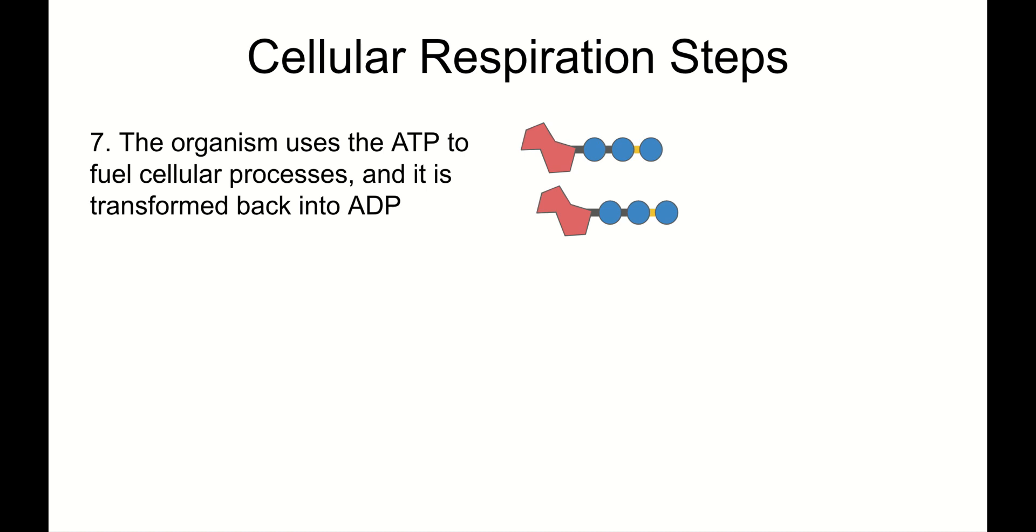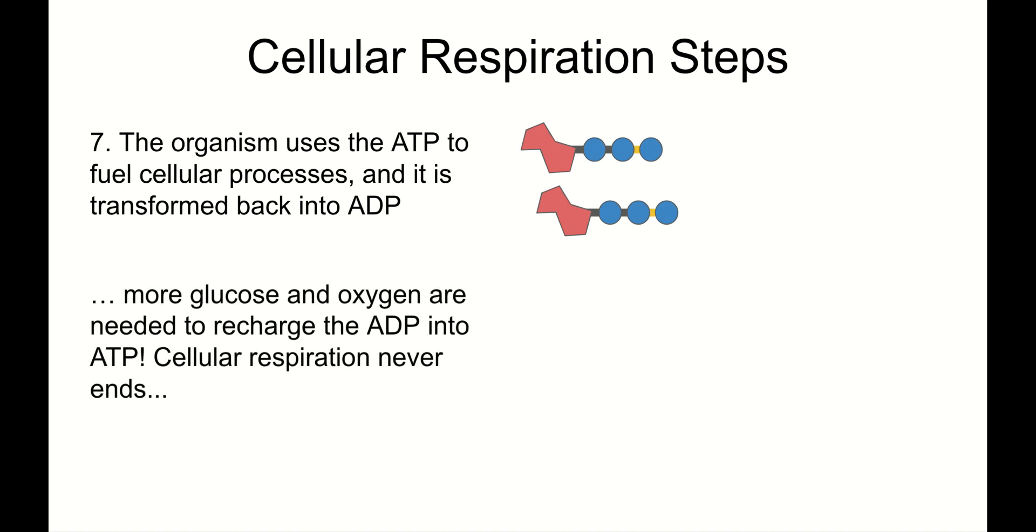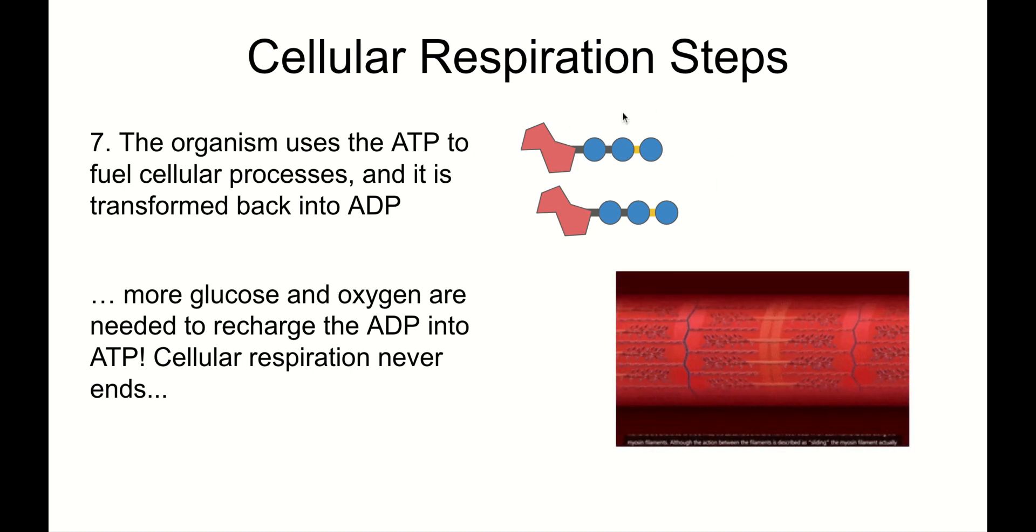Finally, last step, step seven: The organism will use the ATP to fuel cellular processes. And the ATP will be transformed back into ADP. So we'll need more glucose and oxygen to recharge that ADP into ATP. Cellular respiration never ends. Here's what I mean. We just made some ATP. We contract our muscles and in doing that, we break our ATP back down into ADP because we transfer this chemical energy into mechanical energy. And that mechanical energy will probably be lost to the atmosphere as thermal energy or heat. Now they're just separated little uncharged ADP molecules and we've got to charge them back up again and start that whole process over.